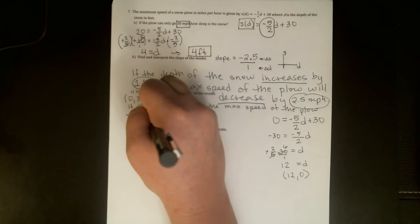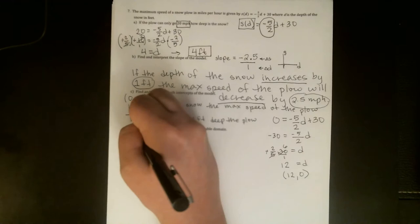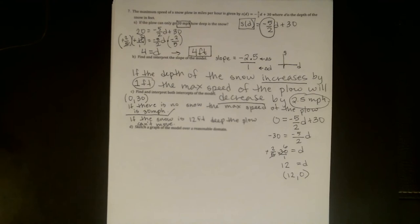We were looking for an intercept, so remember this is a point. D is 12 when s is zero. And when you interpret, you need to make sure you mention both of those values. So this is telling me that if the snow is 12 feet deep, the maximum speed of the plow is zero miles per hour. So I would simplify that statement a little and say, when the snow is 12 feet deep, the plow can't move.